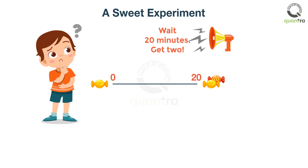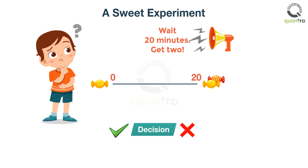Perhaps counterintuitively, we can conclude that there is no right or wrong decision to make here. On the surface, it seems that if the child is not greedy and waits, she gets doubly rewarded for her patience later. However, what if we were to extend the time frame to 200 years rather than 20 minutes? Then the decision to wait may not be such a good one.